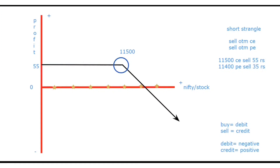And now what we will do is we will create the 11,400 put ka payoff graph. We are selling it — selling matlab credit, credit matlab positive, zero line ke upar graph aayega. Yahan par 55 rupees upar aayega and 35 rupees neeche aayega. To ye line would be below this line — this would be 35 rupees.